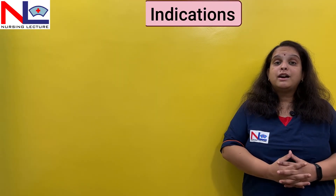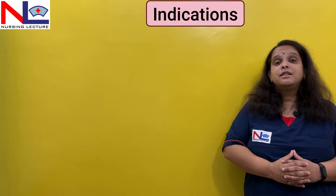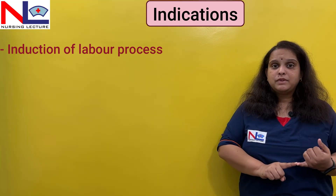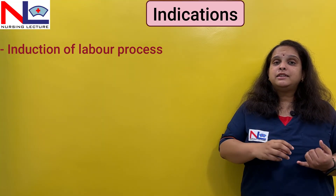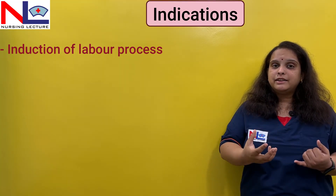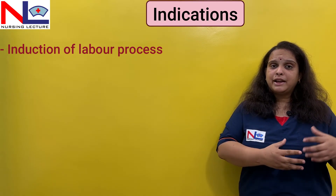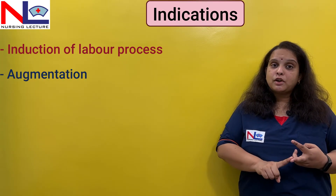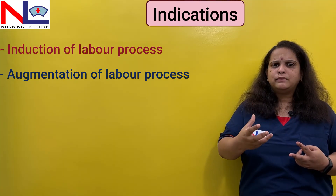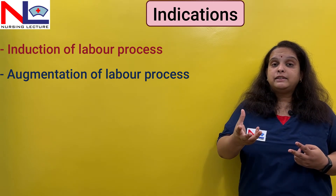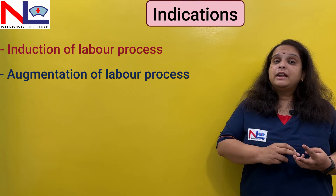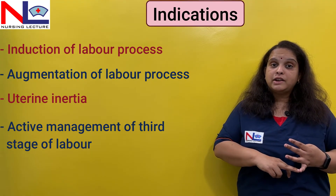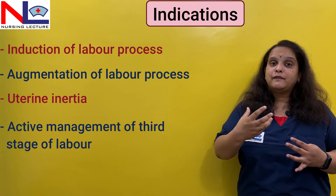Next, the indications for administering this drug. For induction of labor — if the pregnancy reaches near term and spontaneous labor has not started, oxytocin can be used to artificially initiate the labor process. For augmentation of labor where uterine contractions are not frequent, regular, or intense, this drug can be infused to maintain regularity. It can also be used in uterine inertia and for active management of the third stage of labor, where we want the placenta delivered within 5 to 10 minutes.